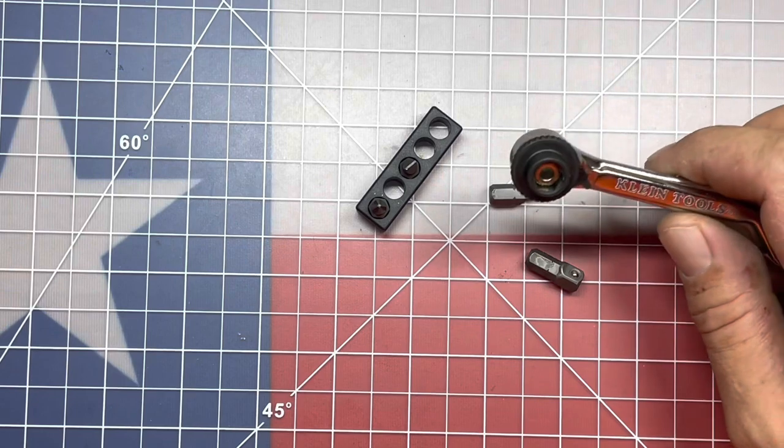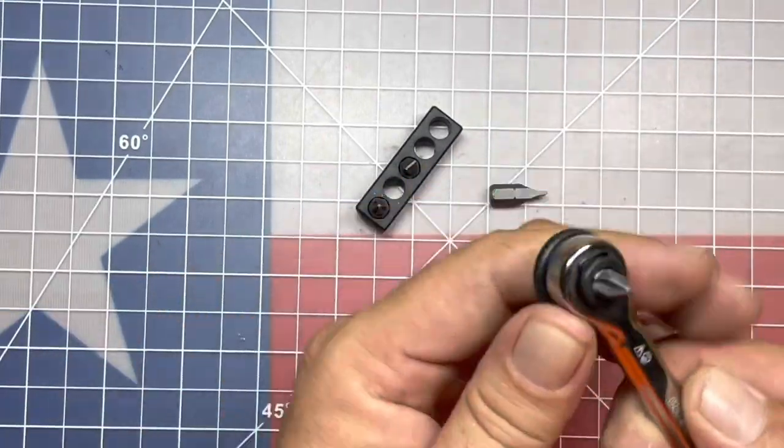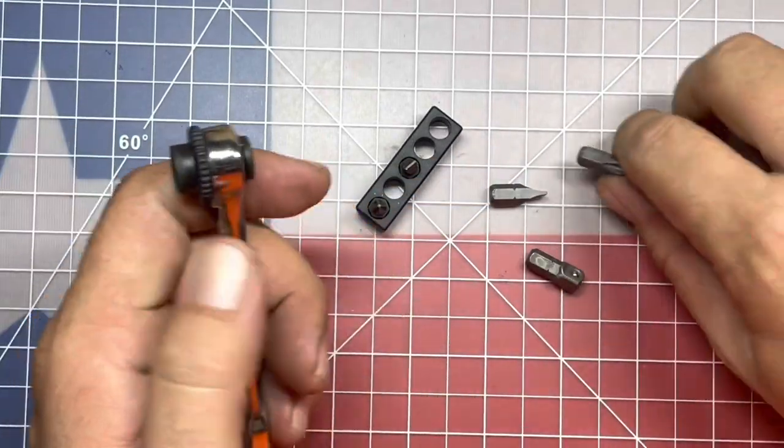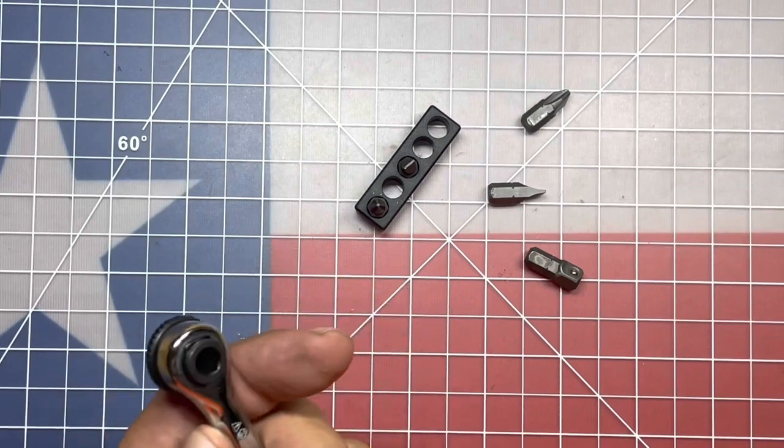So I really like the way this ratchet performs. 72 tooth, so that's going to be 5 degree arc swing. And then, let's see if we're in any trouble. Nope, no trouble getting the mount after we put some torque onto it.